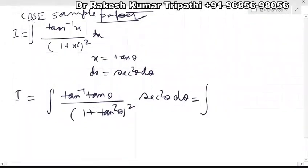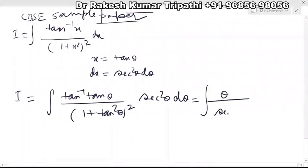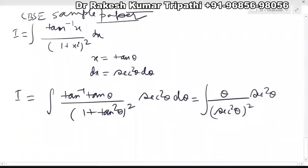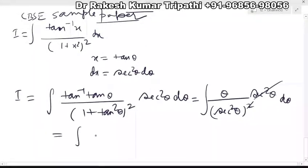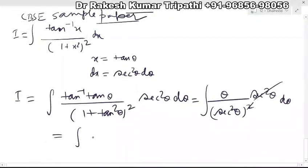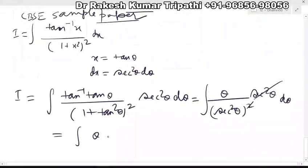Now 1 + tan² θ will be sec² θ, so the denominator becomes (sec² θ)² into sec² θ. One sec² θ will be cancelled from numerator and denominator, therefore this integral becomes θ into 1/sec² θ, which we can write as θ cos² θ.